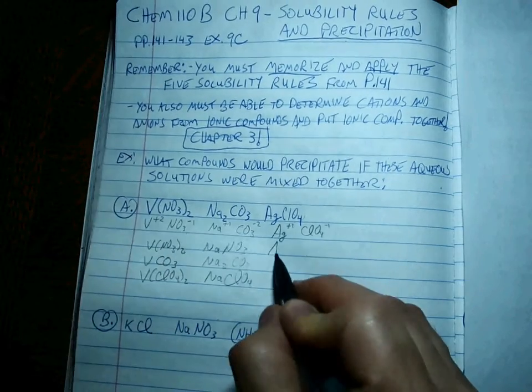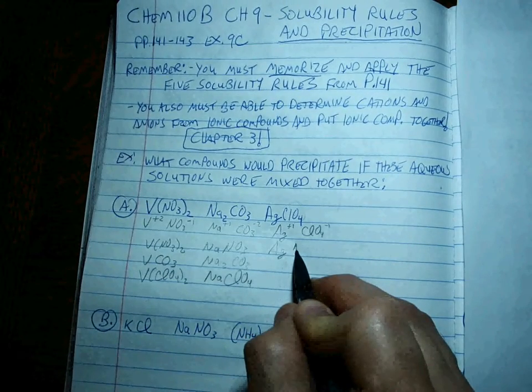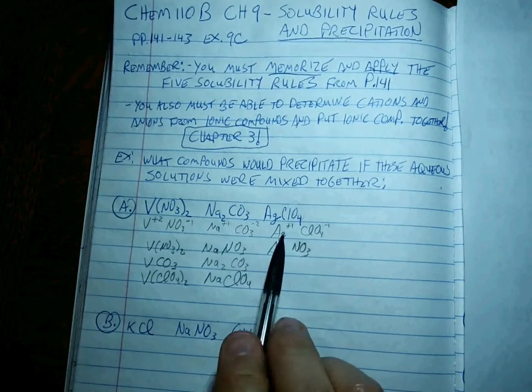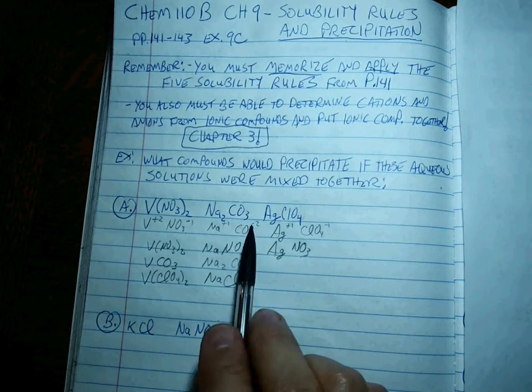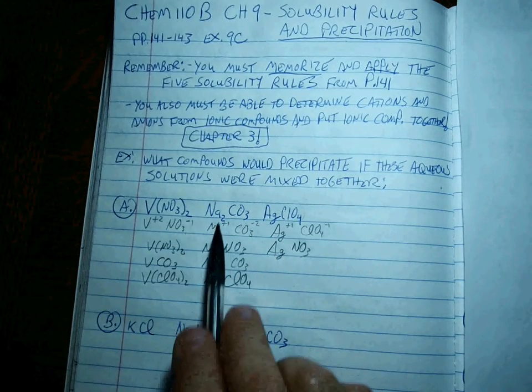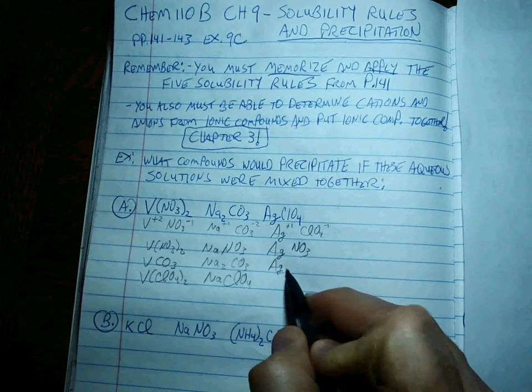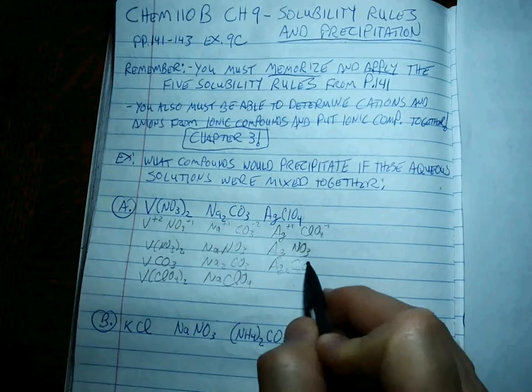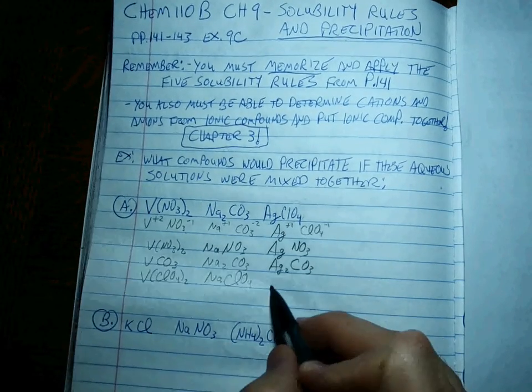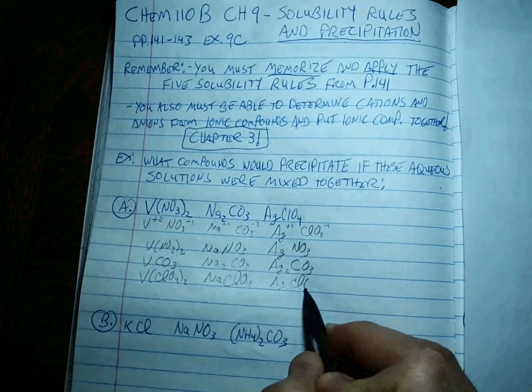Last one. Ag plus 1, NO3 minus 1. AgNO3. Ag plus 1, CO3 minus 2. It's the same ratio as the other plus 1. So you sort of don't have to rethink it. And then that's that one that's left.